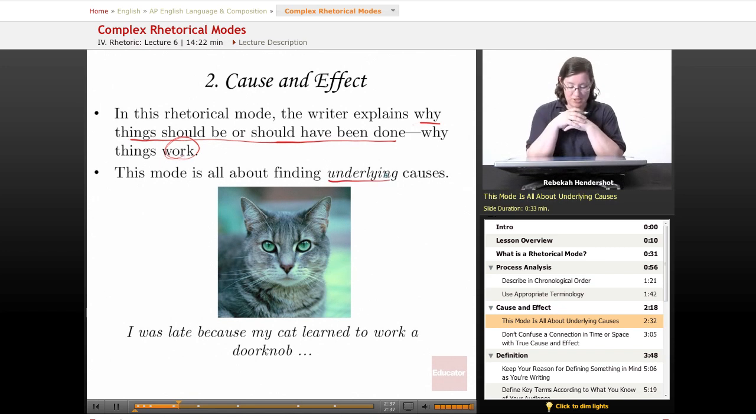So the example we have here is: I was late to school because my cat learned how to work a doorknob, and my cat got out, and I chased my cat all over the neighborhood, and my cat climbed a tree, and I climbed the tree to get the cat. I fell out of the tree and broke my arm, and I had to go to the emergency room, and that's why I'm not showing up at school until lunchtime. So, cause and effect. Why are you showing up at school at lunchtime with your arm in a cast? My cat learned to work a doorknob.